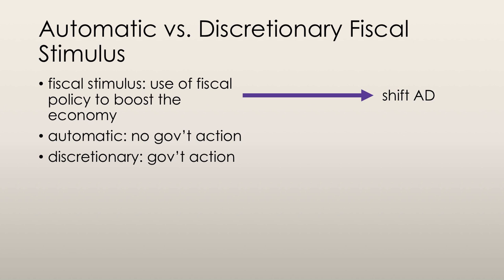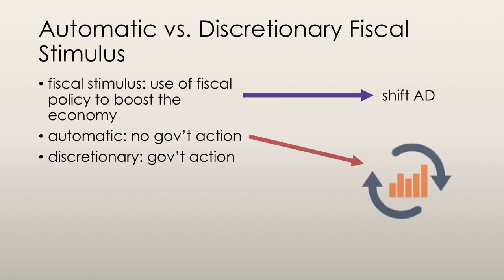However, as we saw in the previous video, changes in the tax rate affect the supply side as well. There are two types of fiscal policy: automatic and discretionary. Automatic fiscal policy involves no government action — there are already measures in place which stabilize the economy's fluctuations.